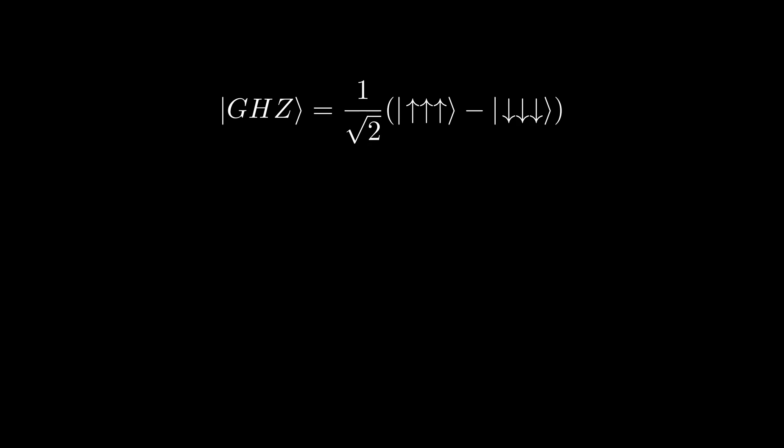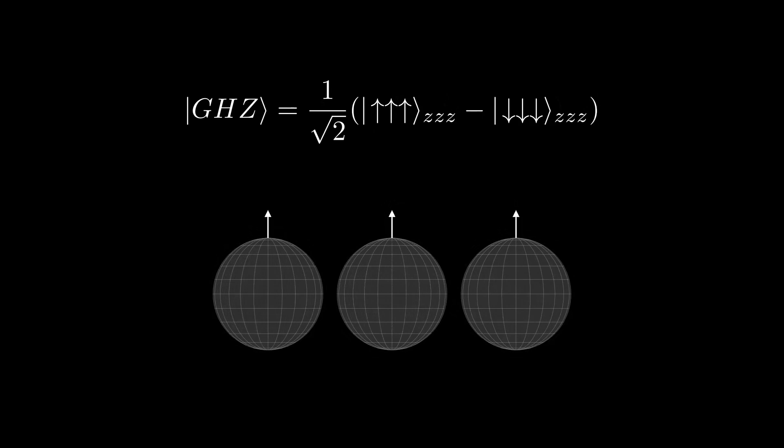By construction, the GHZ state tells us that when all the detectors are oriented in the Z direction, then the three particles will deflect either all up or all down.